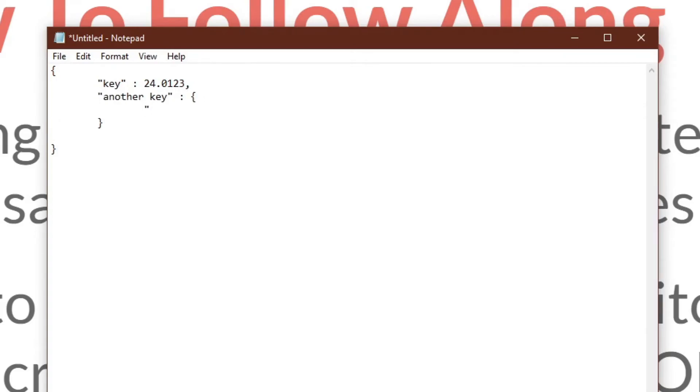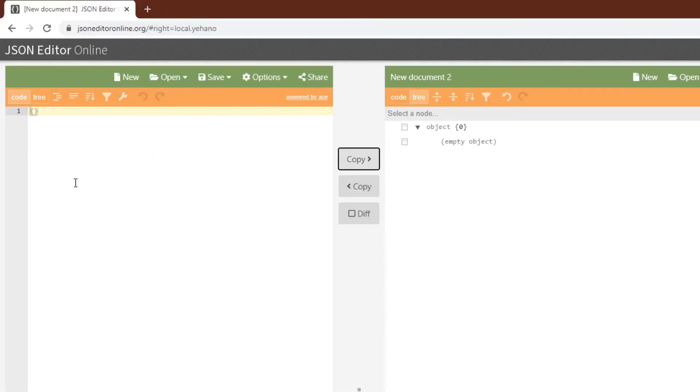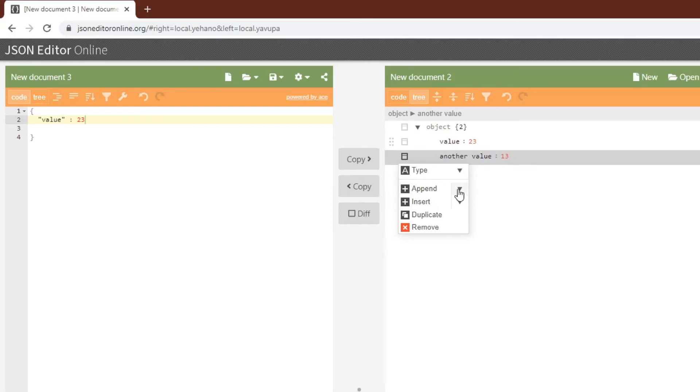And objects can be deeply nested. So this would be a very simple JSON in a text editor. You can also come over to the JSON editor online where you have the nice ability to both write it over here or you can actually create them over here.